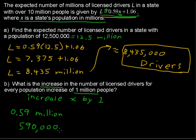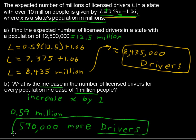So every time you increase a population by a million people, you'd expect to have about 590,000 more drivers, which actually is quite a bit when you think about the roads. But anyway, mathematically, that is an application of the slope-intercept form of the slope-intercept equation.